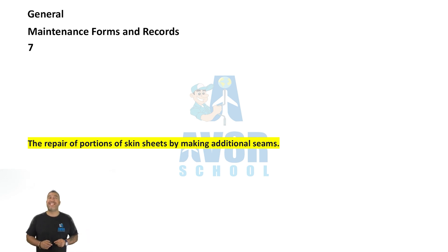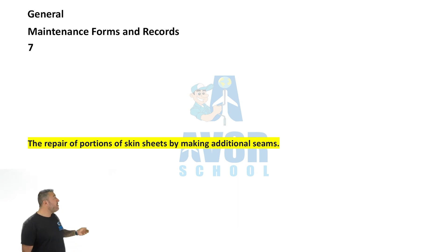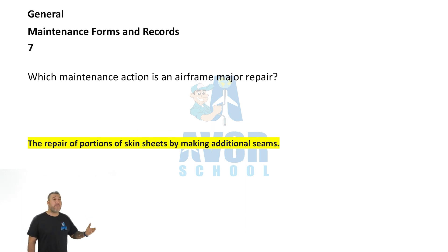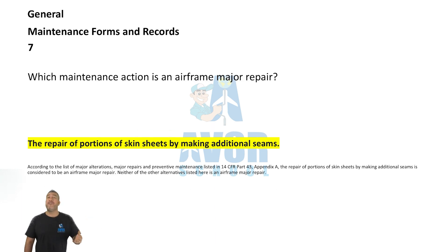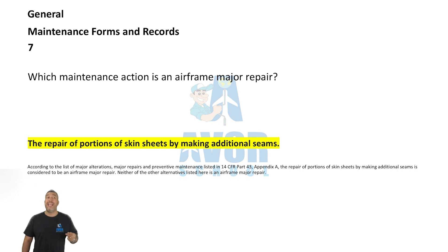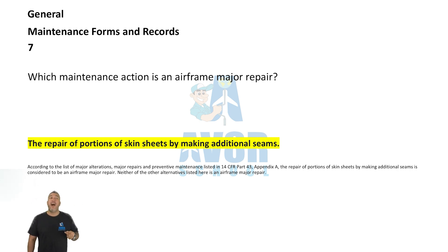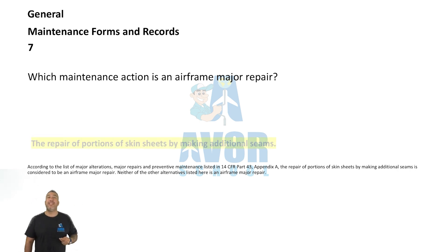Number seven: Which maintenance action is an airframe major repair? The repair of portions of skin sheets by making additional seams constitutes an airframe major repair.